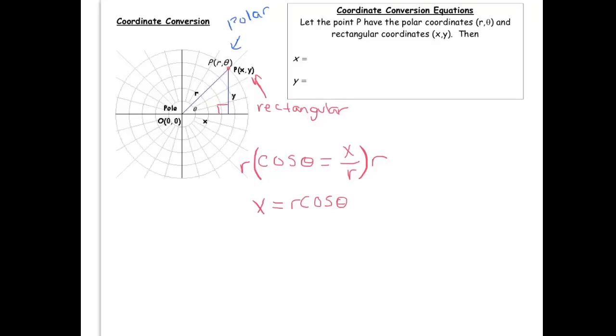So this is useful if you want to convert from polar to rectangular. If you know r and you know theta, you'll just get the x coordinate by doing r times cosine theta. So x is equal to r cosine theta.